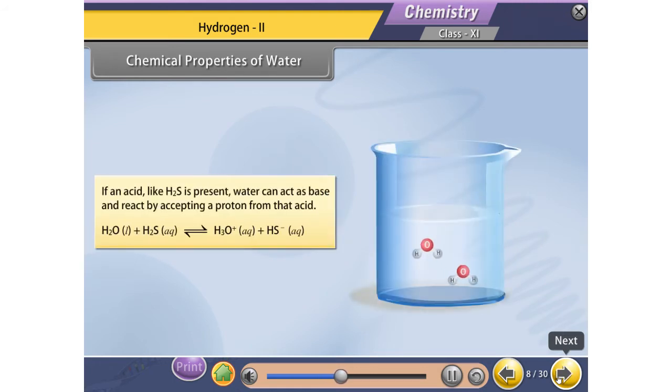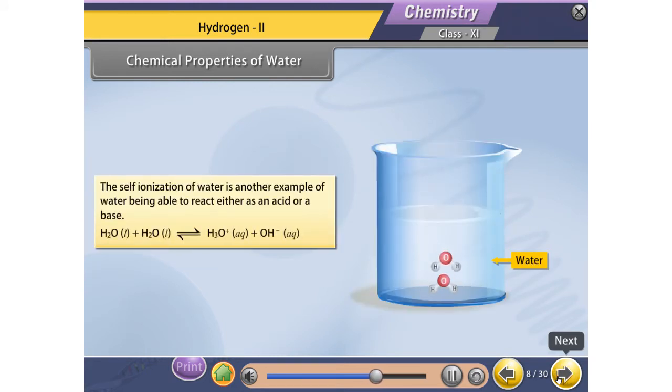If an acid like H2S is present, water can act as a base and react by accepting a proton from that acid. The self-ionization of water is another example of water being able to react either as an acid or a base.